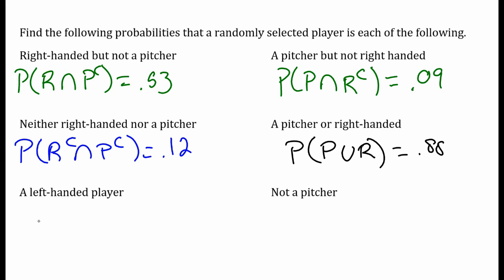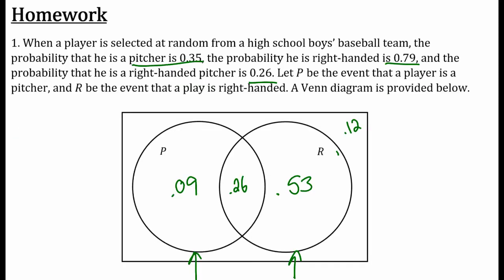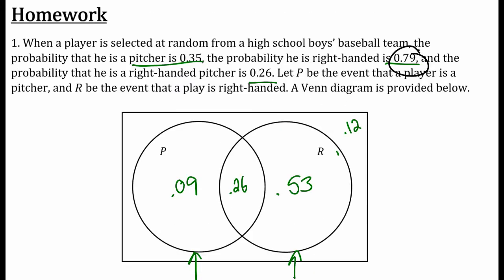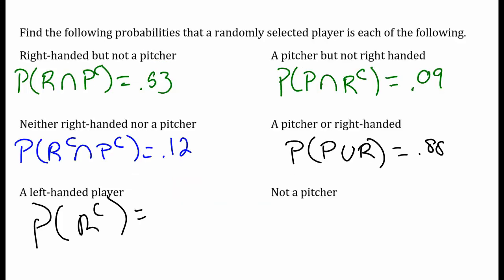What's the probability that I find a left-handed player? Well that's the probability that they're not right-handed. What's the probability of not right? Well if right-handed is 79%, the entire right circle is 79%, what percent's left over? Well that's 1 minus 0.79, which gives me 21%, so 0.21.